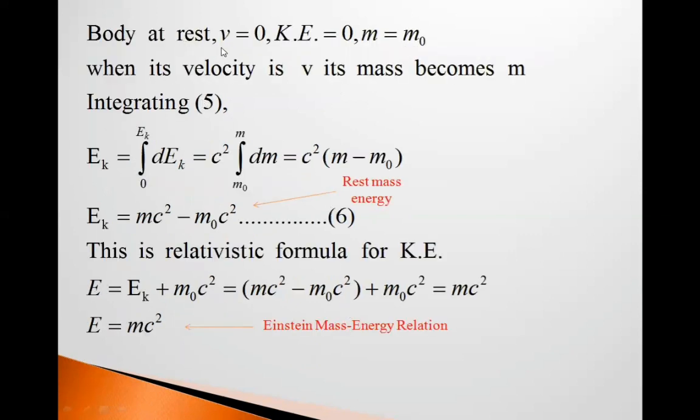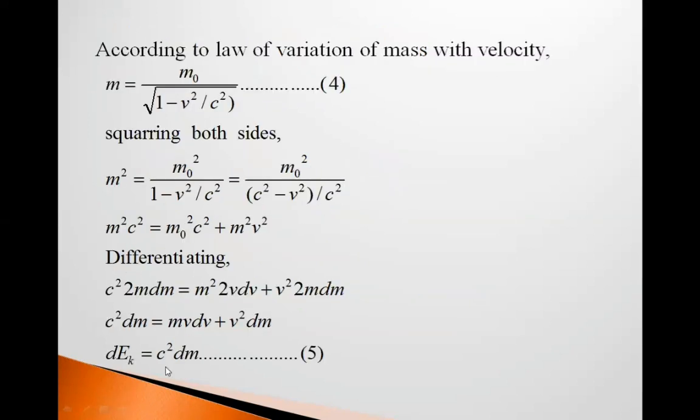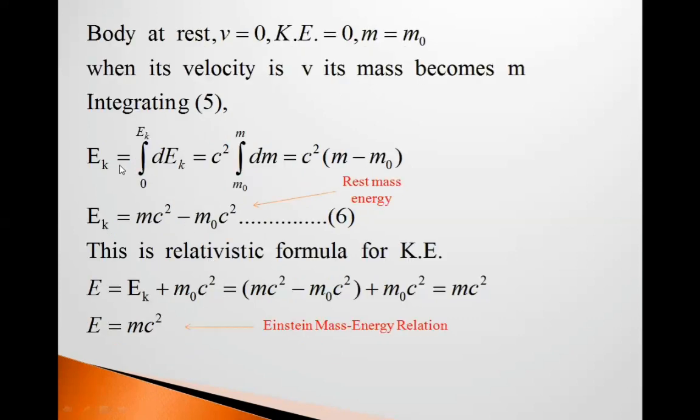Body at rest, v equals 0, kinetic energy equals 0, m equals m0. When its velocity is v, its mass becomes m. Integrating equation 5, this equation we have to integrate.